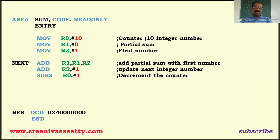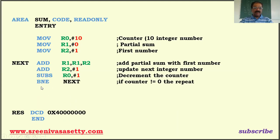SUBS R0, R0, 1 — out of 10 numbers we have completed one, so we decrement the counter. The 'S' suffix means it updates the CPSR (Current Program Status Register). If you write simply SUB it won't update the CPSR flags, but SUBS will update the status register. So R0 decrements from 10 to 9.